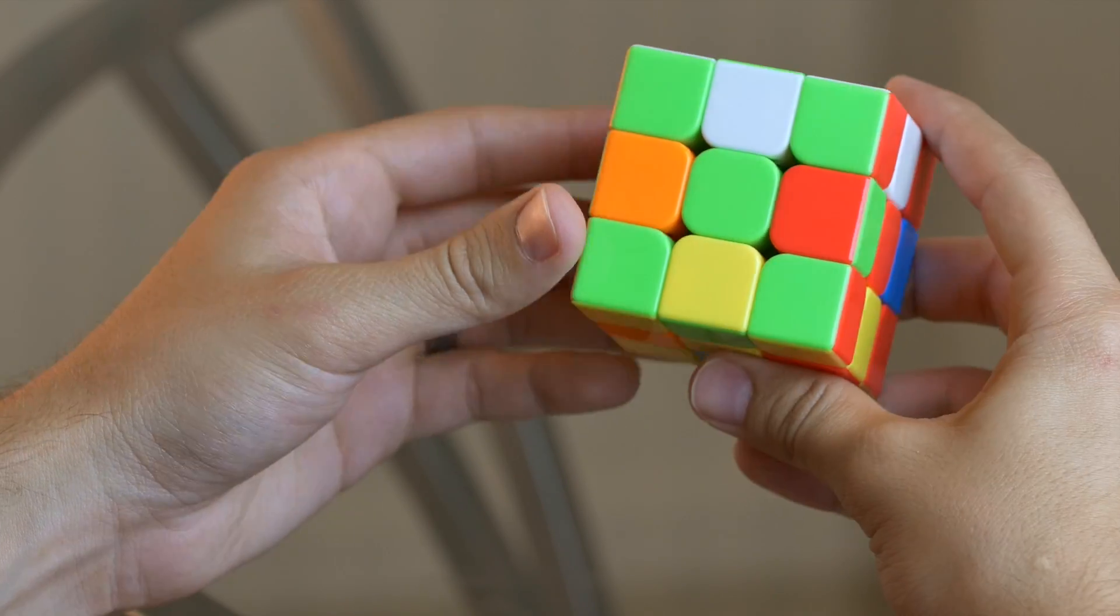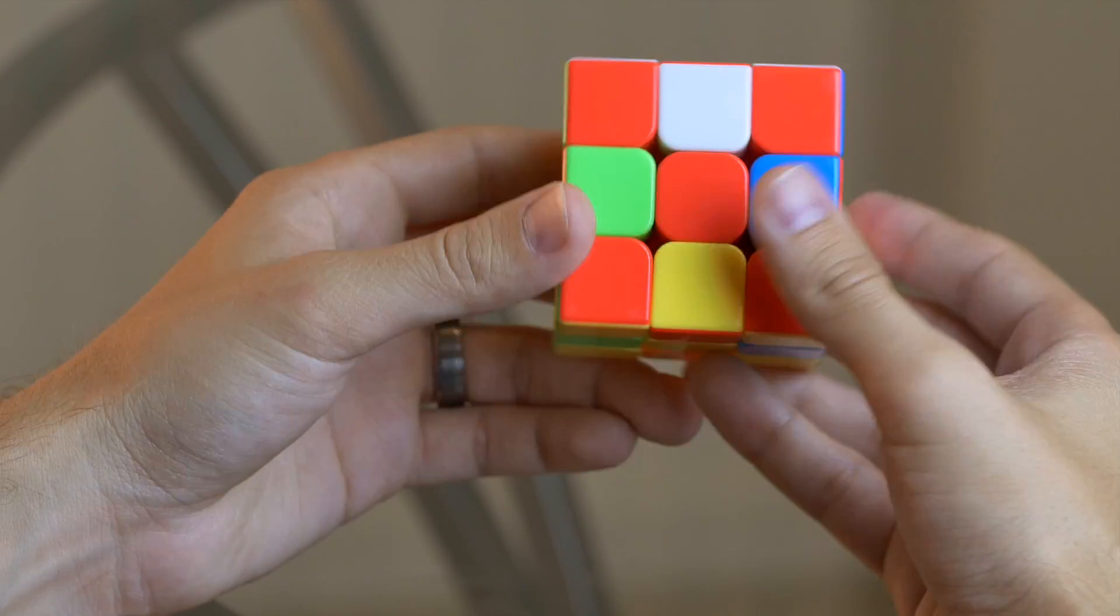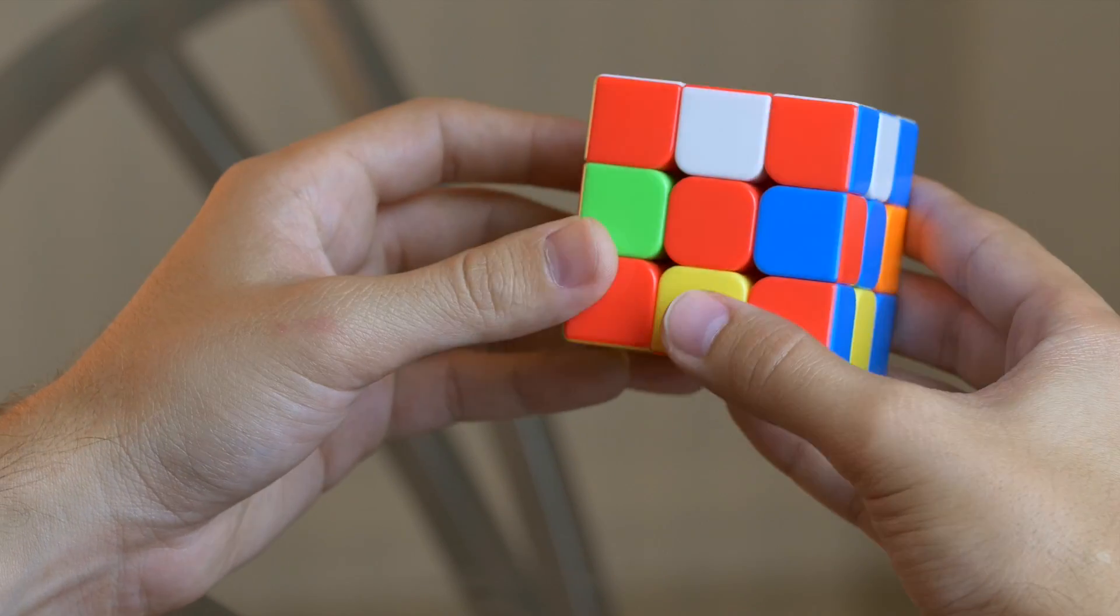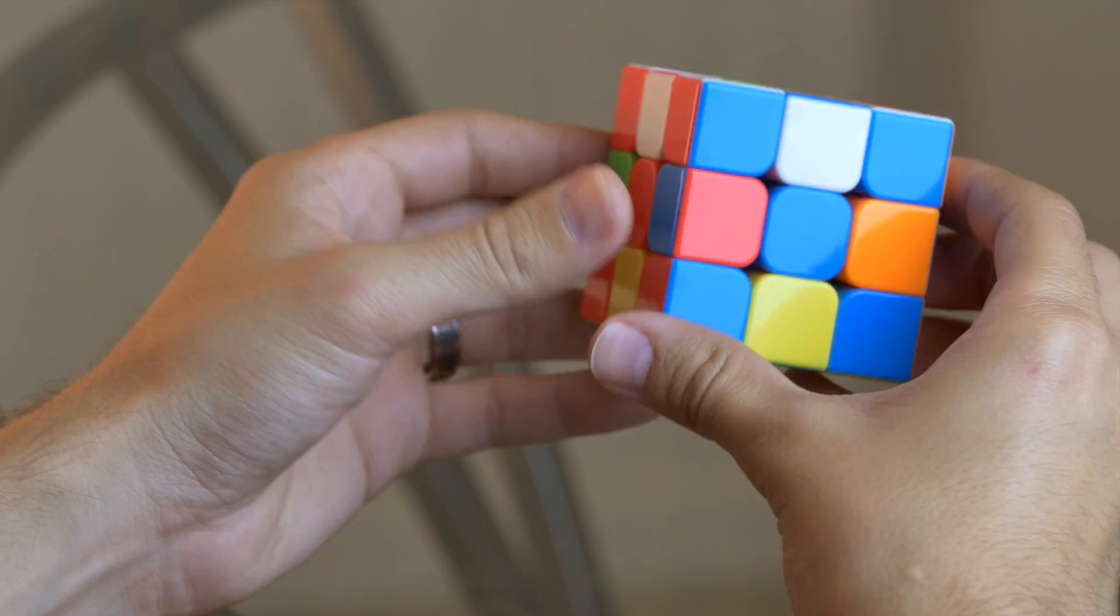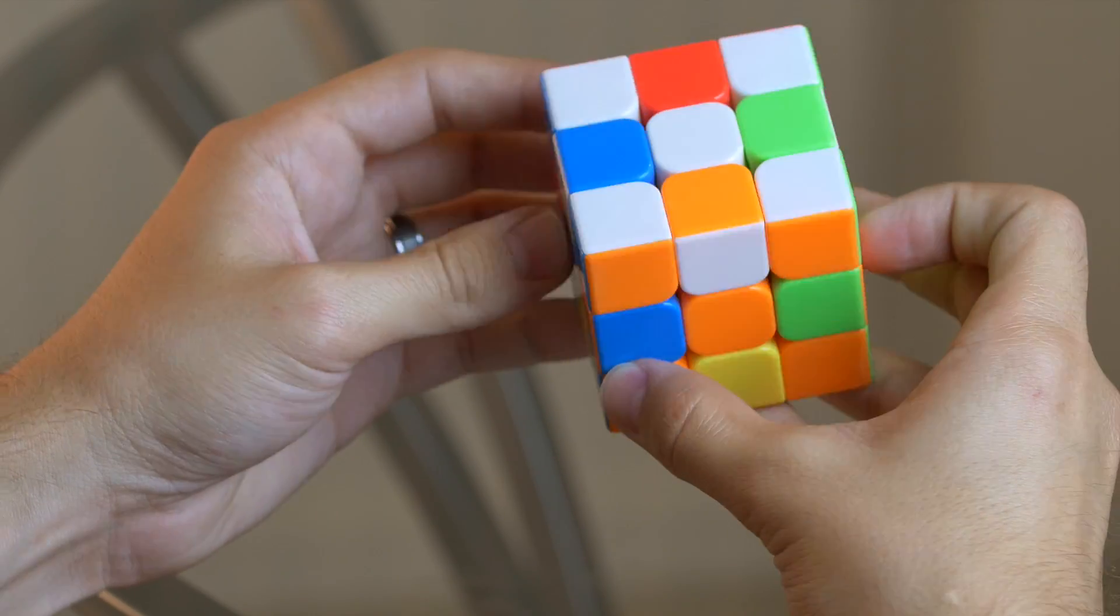And as you can see with this formation, everything is in its correct spot, it's just flipped around. That's why they call it the super flip. So all the reds, and then the blues, and then just these side pieces are flipped around completely.